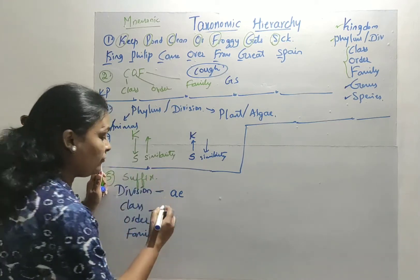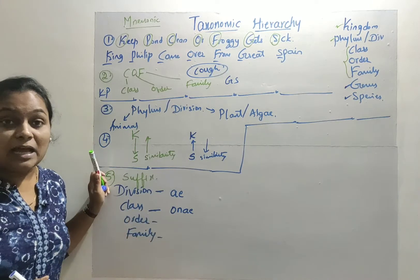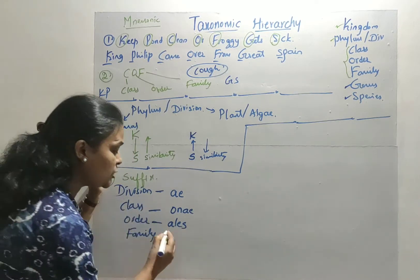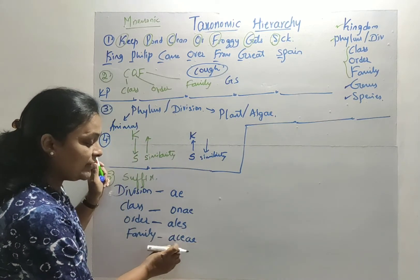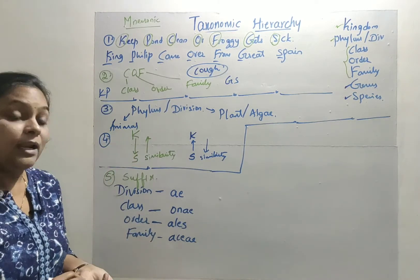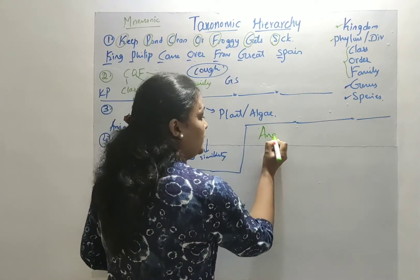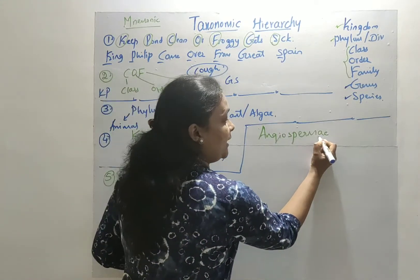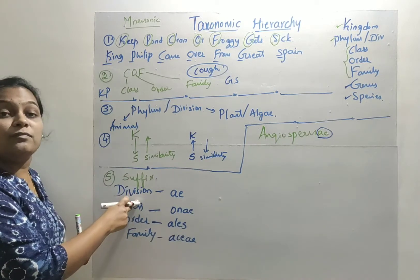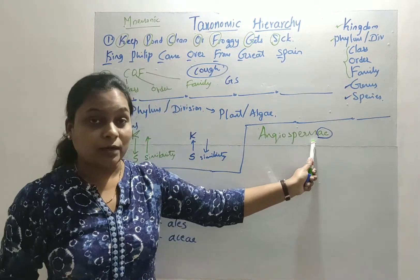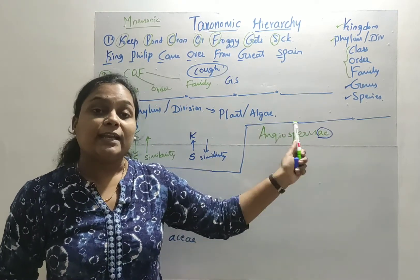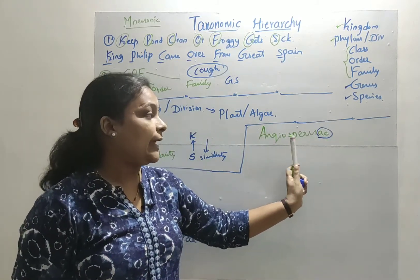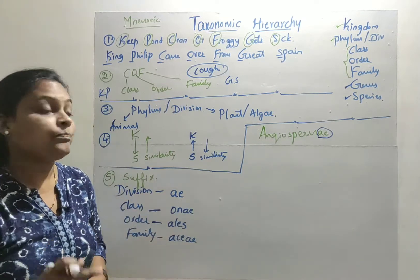Any word ending with '-onae' is the name of a Class. Any word ending with '-ales' is an Order name. Any word ending with '-aceae' is a Family name. For example, 'Dicotyledonae' ends in '-onae' so it is a Class, and mango belongs to this class. 'Monocotyledonae' also ends in '-onae' so it is also a Class, and wheat belongs to it.